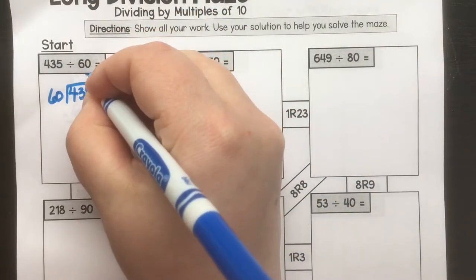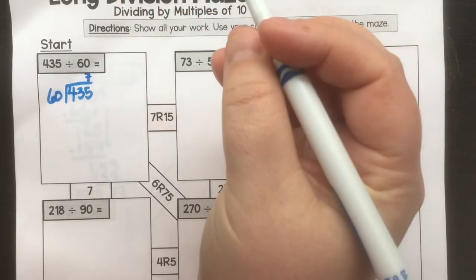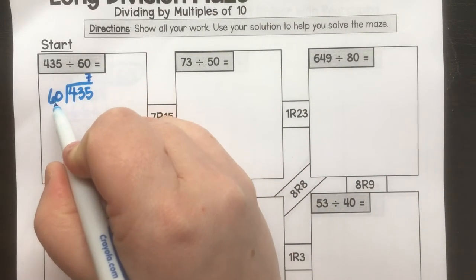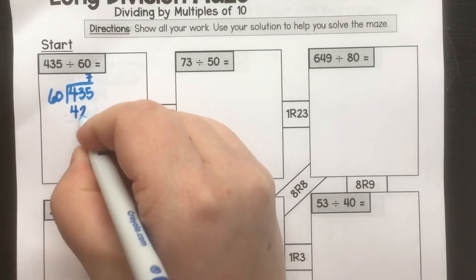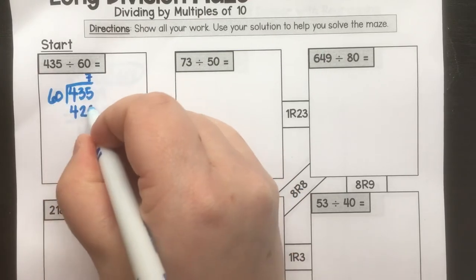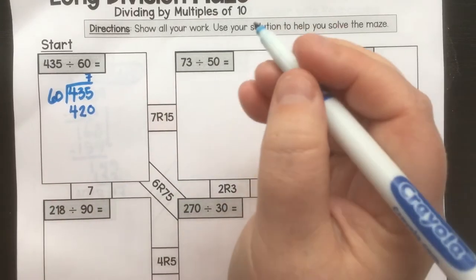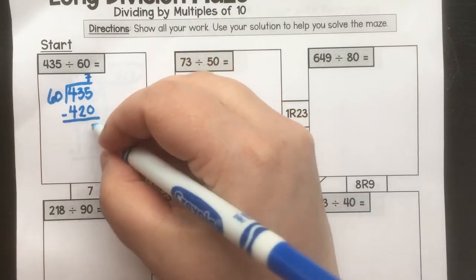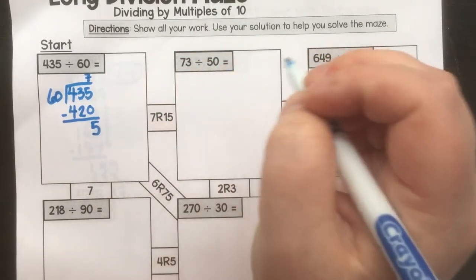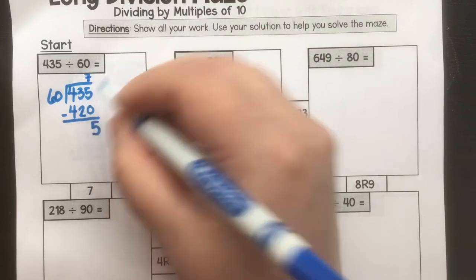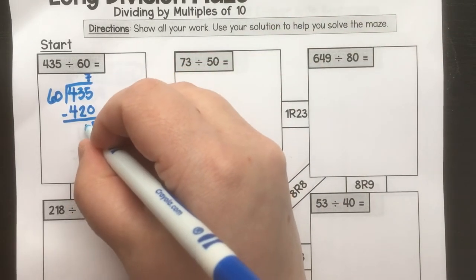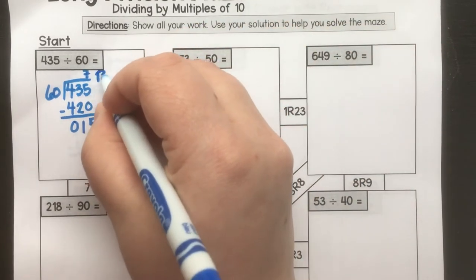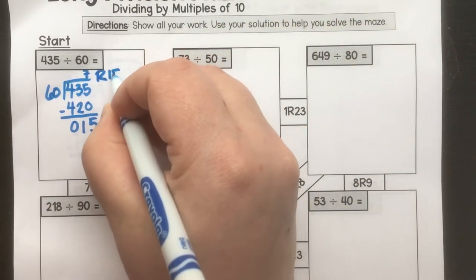So I'm thinking 7. How do I know that? Because I know that 7 times 6 is 42. So 7 times 60 is 420. Subtract. 5 minus 0 is 5. 3 minus 2 is 1.